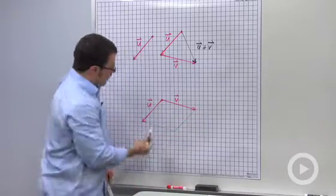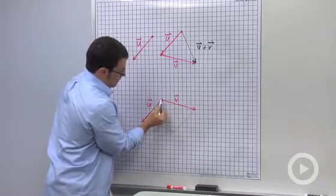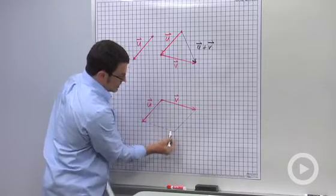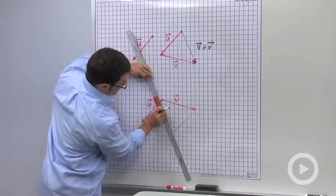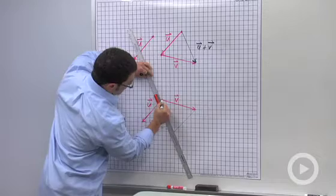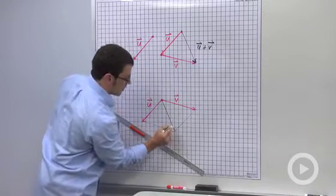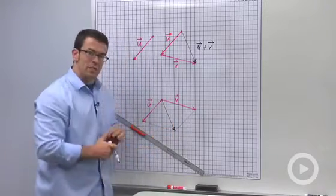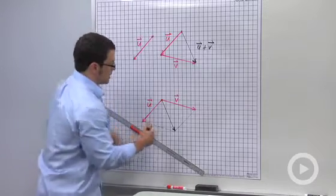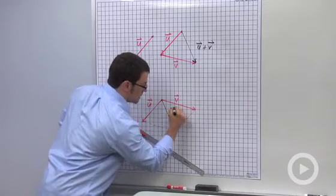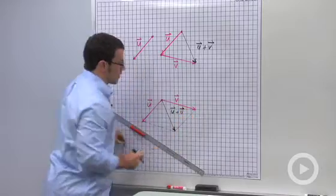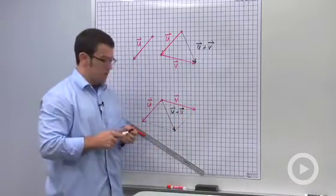And so if you draw a vector starting at the tail of the two vectors and ending at this point, you'll also get the sum. This is the parallelogram method. And even though it's a little more time consuming, it's very useful in certain applications. But this also is u plus v. So we have two ways of coming up with the sum of two vectors.